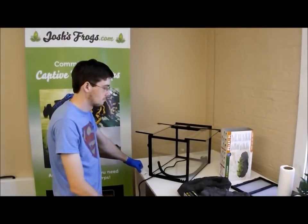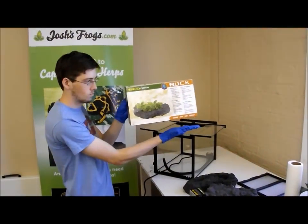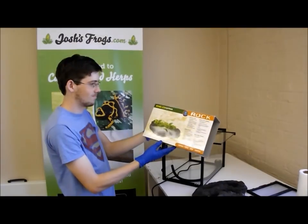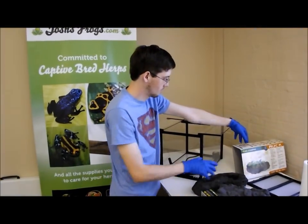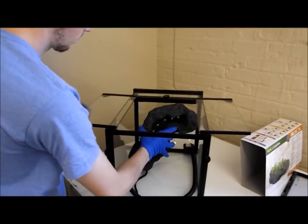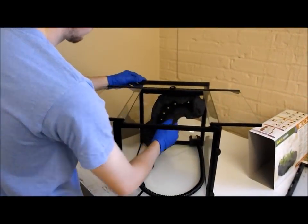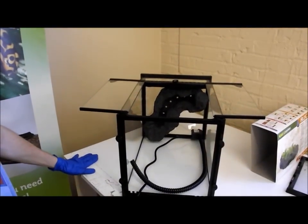Next we'll install the planting rock available on joshsfrogs.com. We just recently started carrying this product and we're very excited. It's realistic and it's actually designed to plant live plants directly in there. Austin, go ahead and put the planting rock in the terrarium. We're going to be placing this planting rock along the bottom there, or what will be the bottom in the future, to actually act as a retaining wall that will hold back our gravel substrate we're going to surround the plant and the pump with.